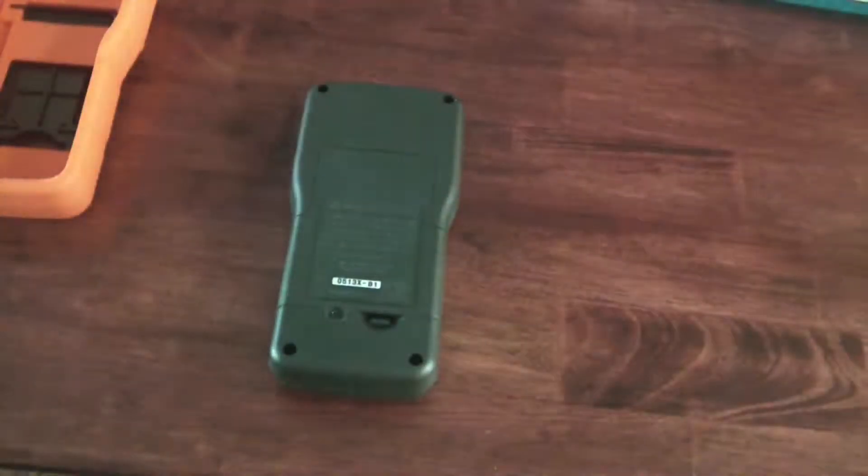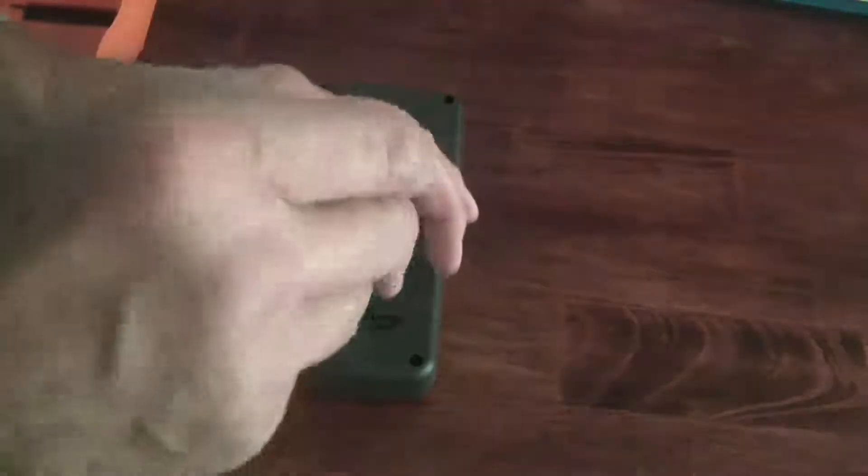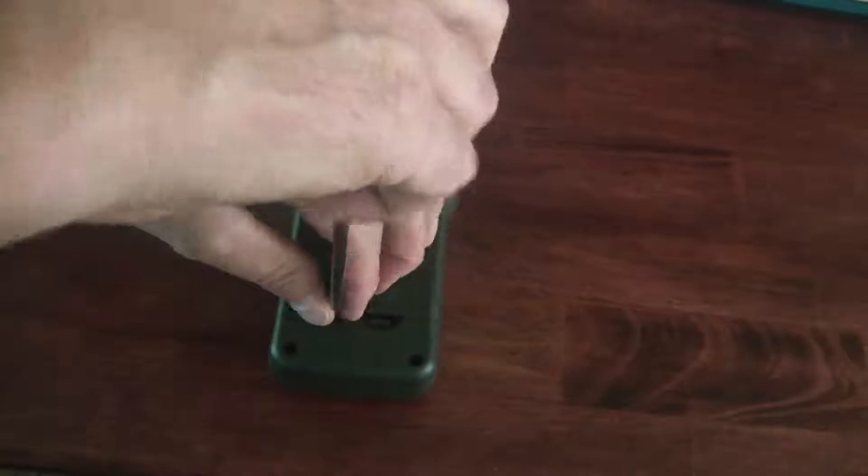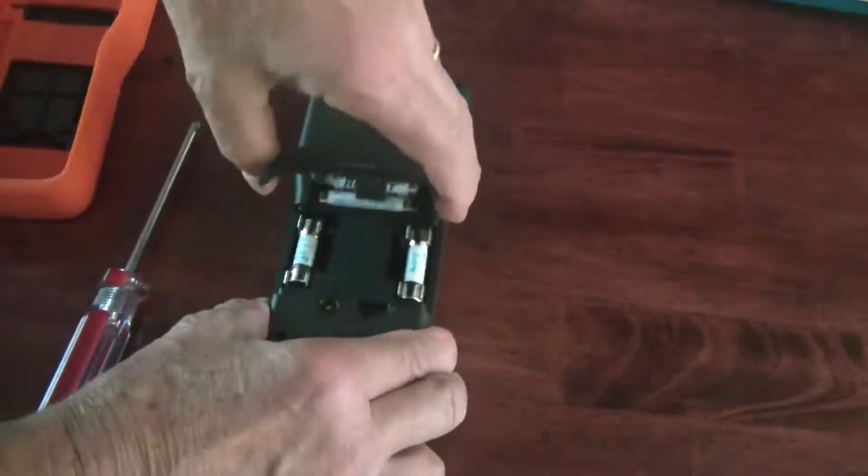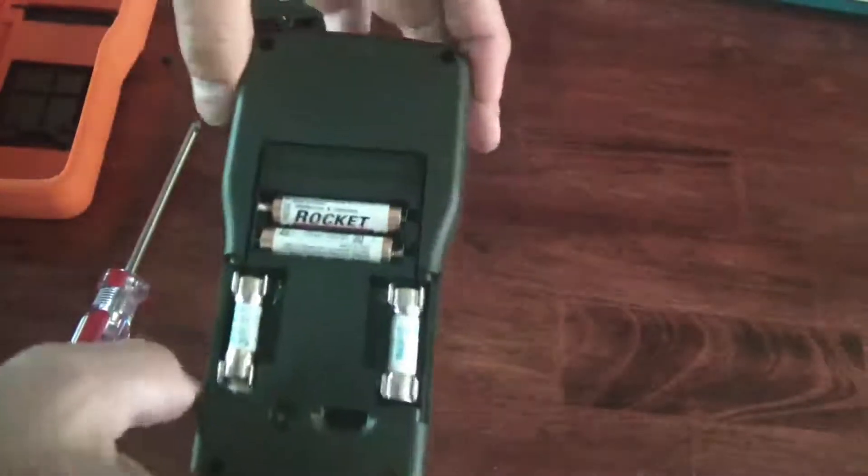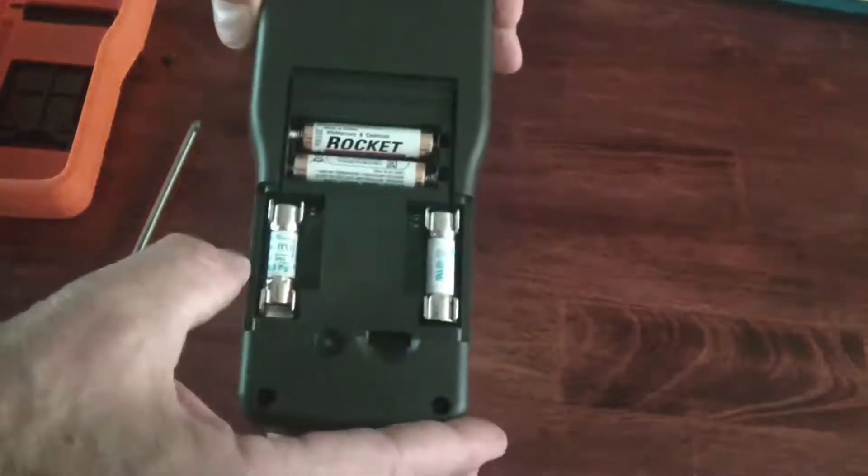I just wanted to show you the battery compartment. And so you've got to unscrew one screw here, Phillips head. And then once that comes out, this opens up. And there are your batteries, and then there are your two fuses.